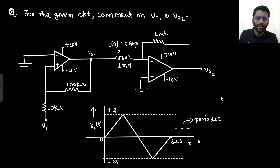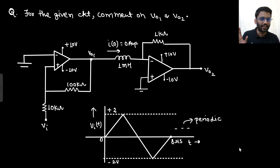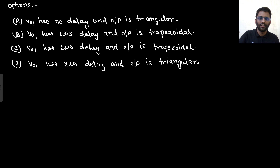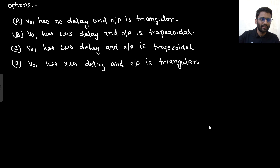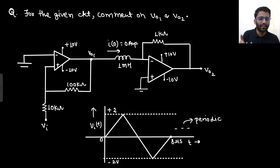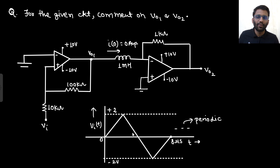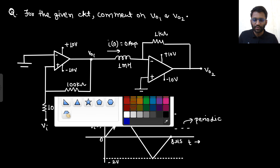The circuit was given; you needed to comment on V_out1 and V_out2 waveforms. This was the input and these two op-amp circuits were given. The options were: V_out1 has no delay with triangular output, V_out1 has 1 microsecond delay, 2 microsecond delay, and output is trapezoidal or triangular. So the delay of V_out1 and the output shape are the two things you need to comment on. Saturation voltage of op-amp is plus 10 and minus 10.